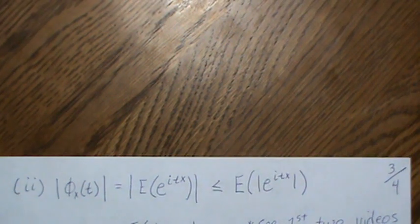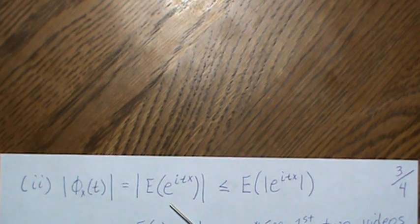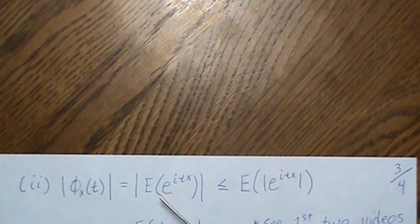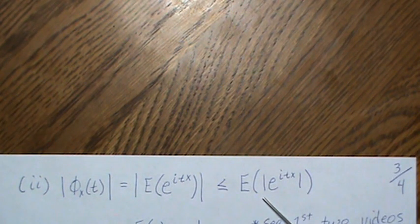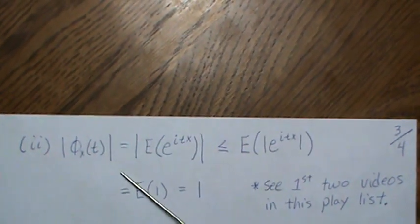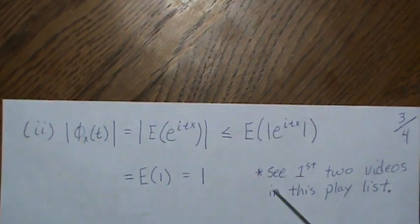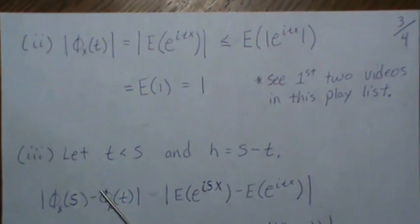To show it's bounded, we take the absolute value of the characteristic function, which by definition is |E[e^{itX}]|. In the first video I showed that the absolute value of the expectation is less than or equal to the expected value of the absolute value. The modulus of e^{itX} is one, which I prove in the first or second video. Therefore the characteristic function is bounded by one.